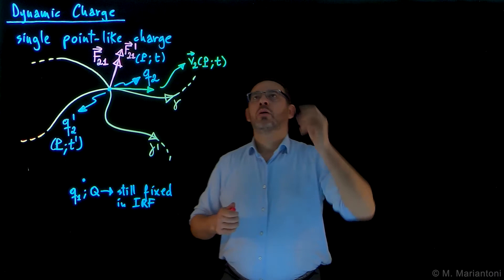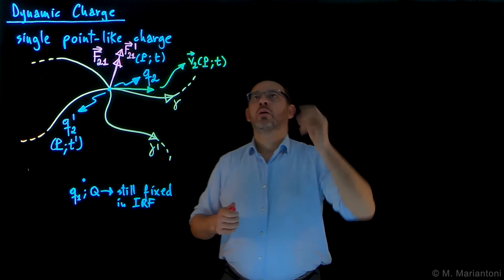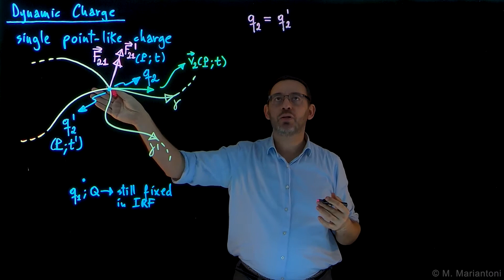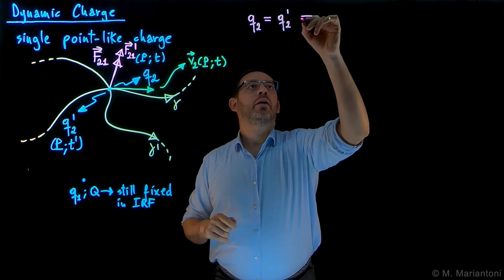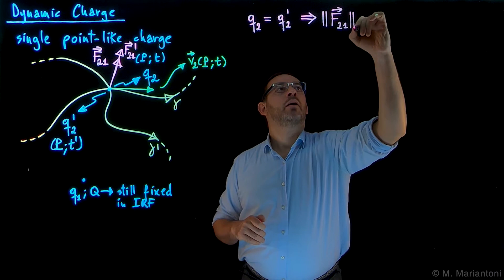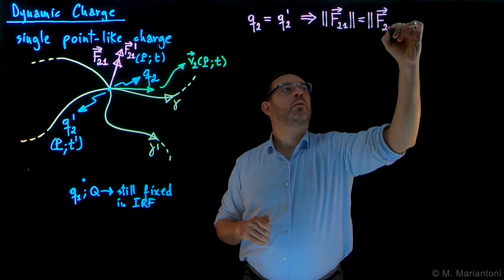Now, the two charges q2 and q2 prime are equal to each other, if you remember the definition we used in the static case. This definition still applies in the dynamic case. So these two charges are equal if it happens that the norm, the magnitude, the amplitude of F21 is exactly the same as the norm of F21 prime.